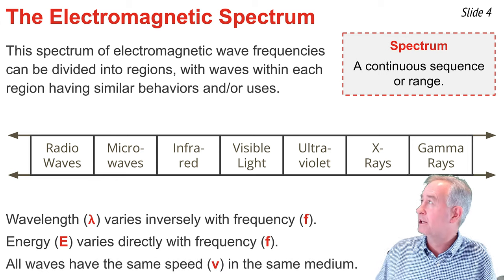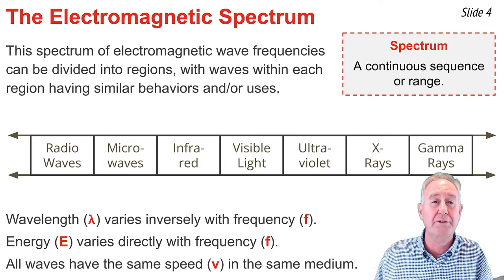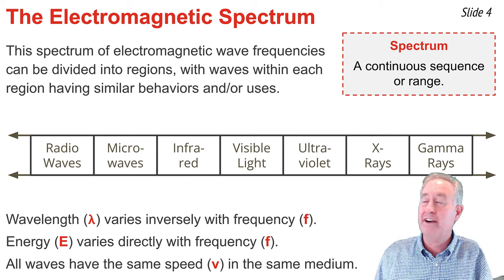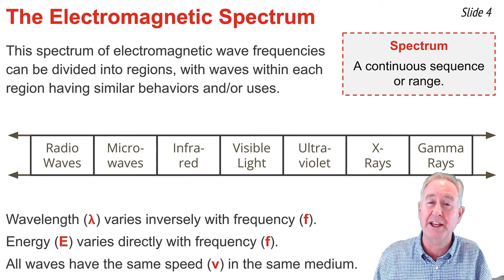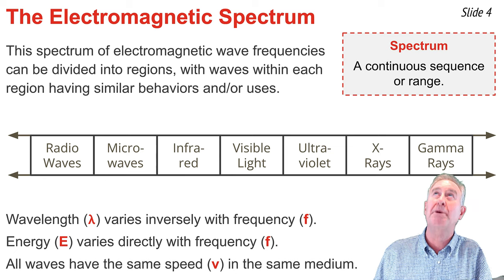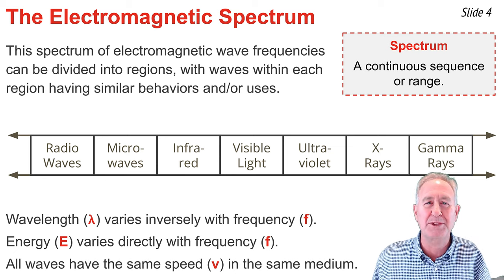The electromagnetic spectrum is organized according to frequency, wavelength, and energy. The left end, or radio wave region, has the lowest frequency and energy, and the gamma rays have the highest frequency and energy.